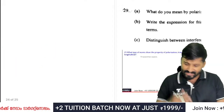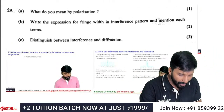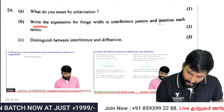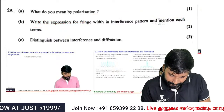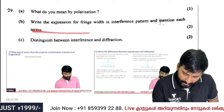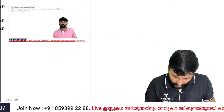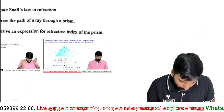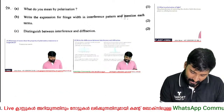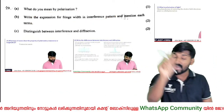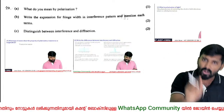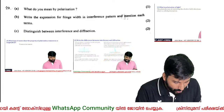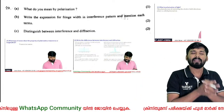What do you mean by polarization? Polarization power is a key concept. The fringe width in a double-slit interference pattern is beta equals lambda D over d, where D is the distance to the screen and d is the slit separation. Distinguish between interference and diffraction.